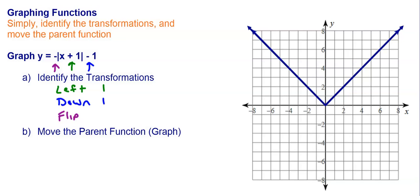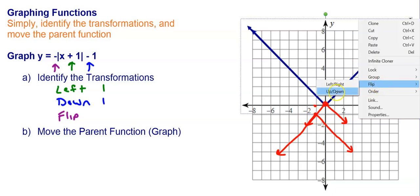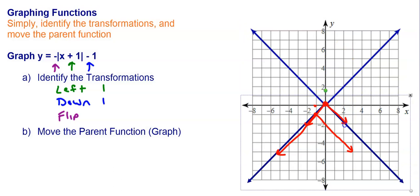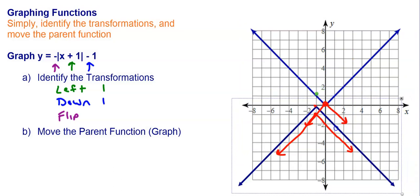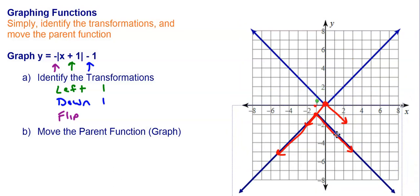Right away what I can do is flip this. I start at my vertex and I can flip it, so that's what my graph is going to look like after I flip it. And now I'm going to move left 1 and down 1, and so my new function is going to be right there. It's like taking that entire function, flipping it, then moving left 1 and down 1, and there's my new function.